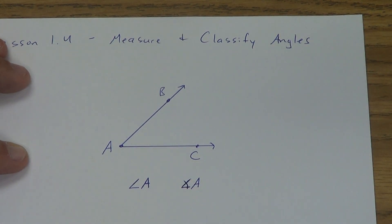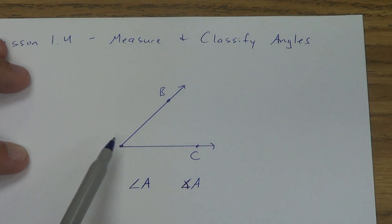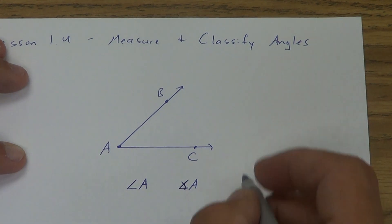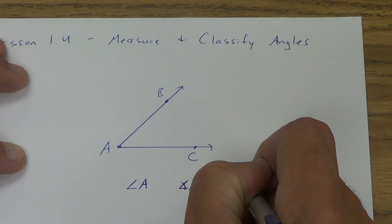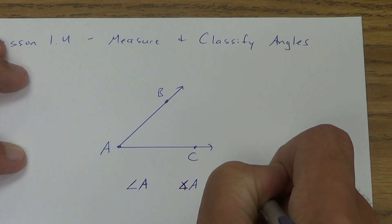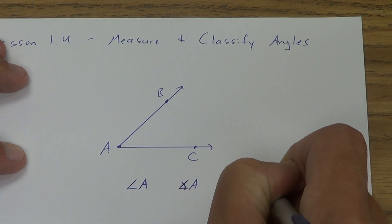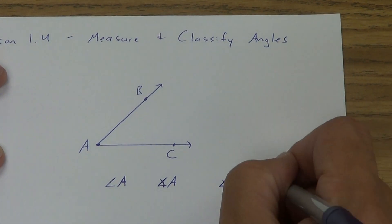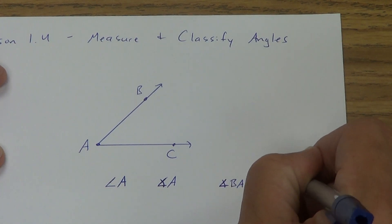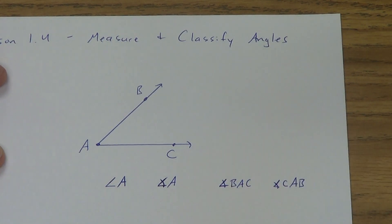The other way you can name an angle is to use three letters. And if you use three letters, this A has to be in the middle. So we could say angle B, A, C. Or you can name it backwards — angle C, A, B. All of these mean the same thing.